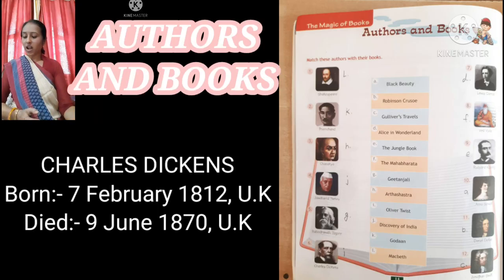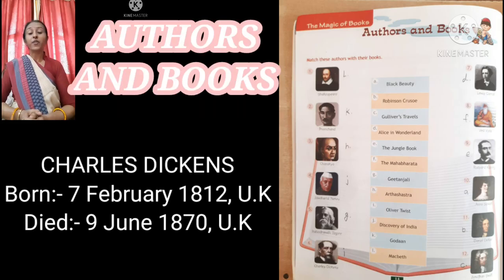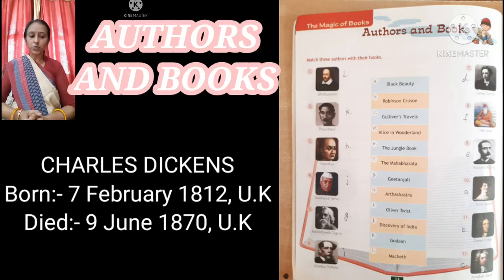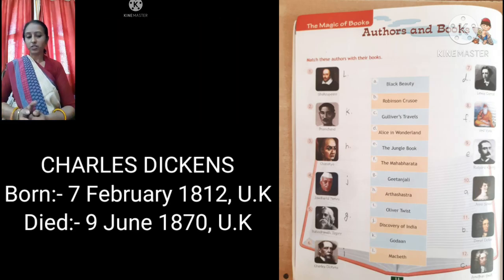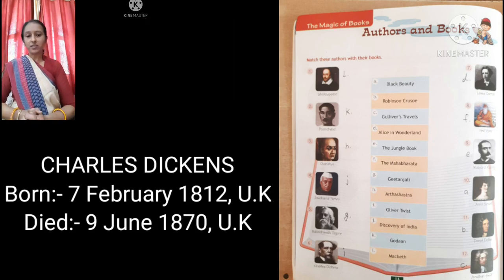The sixth one is Charles Dickens. He is an English writer and a great novelist. He was born on 7th of February 1812 in UK and died on 9th of June 1870 in UK also. The name of his book is Oliver Twist.